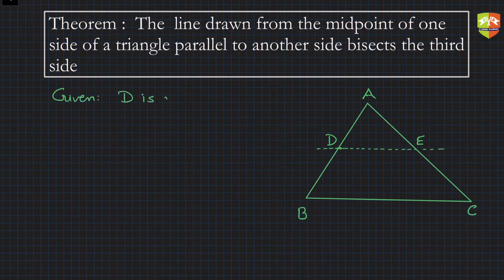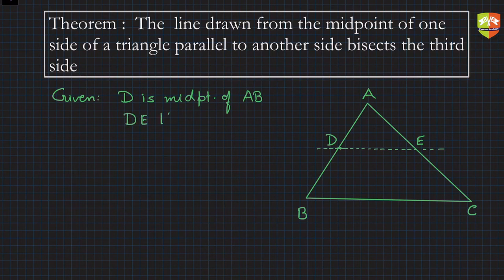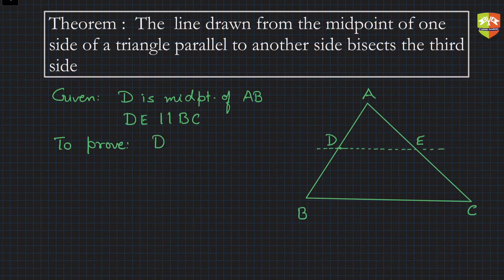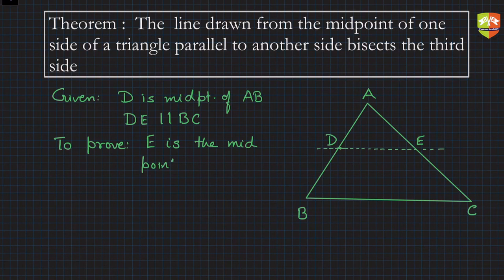Let's write the Given first. Given: D is the midpoint of AB, and DE is parallel to BC. To Prove: E is the midpoint of AC. If we can prove that AE equals EC, then we can say that line DE bisects side AC.